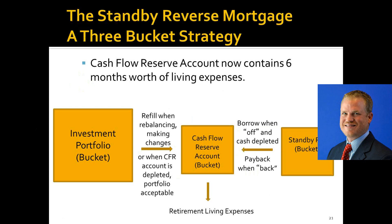I talked about adding in a reverse mortgage line of credit as a third bucket. The only time we borrow from that is that one instance when the cash account went to zero. The other problem we wanted to bypass was opportunity cost. So rather than having two years of cash in the cash account, we'd like to drop that to six months, because we have a liquid, readily available source of cash within that line of credit.